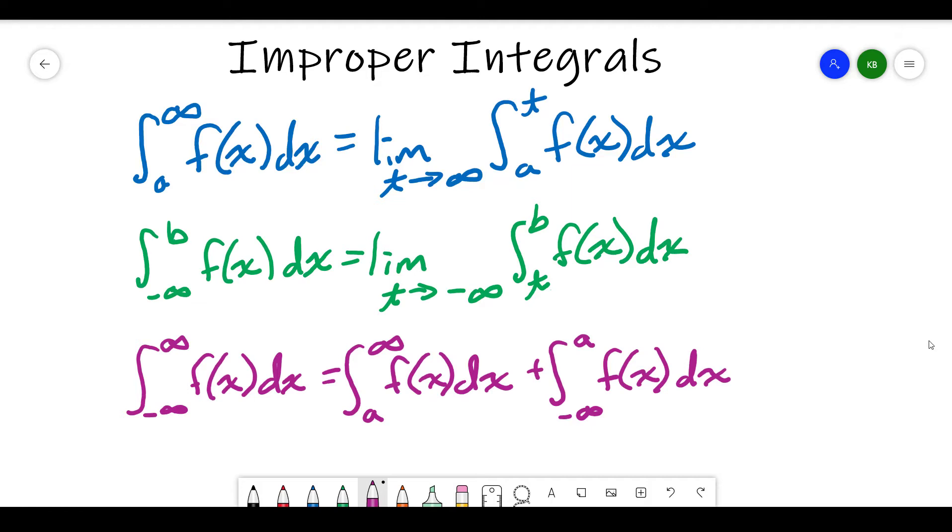Similarly, if negative infinity is the lower bound, we can do the same thing taking a limit as t approaches negative infinity with t as the lower bound. And again, integrate just like we would in the case of a definite integral and then after we finish integrating, we'll take a limit.